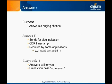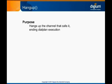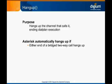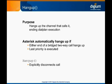Calling the answer application on a call which has already been answered has no effect. The hangup application is straightforward — it hangs up the channel that calls it, ending the dial plan execution. Asterisk will automatically hang up a channel if it is bridged to another channel in a two-way telephone call and either end hangs up. Asterisk also automatically hangs up a channel even if it's not bridged, after it executes the application of the last priority for that extension. The hangup application explicitly tells Asterisk to disconnect a call, regardless of whether there are priorities after the hangup.